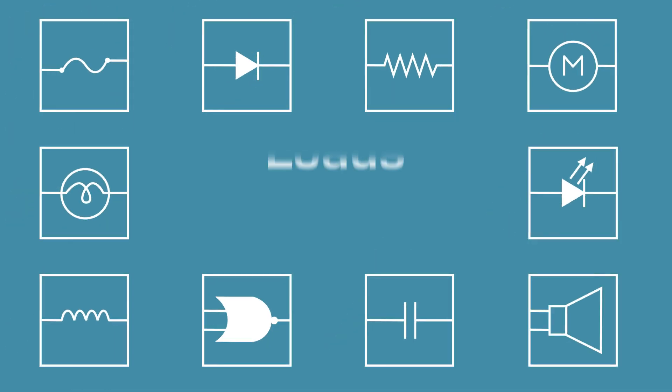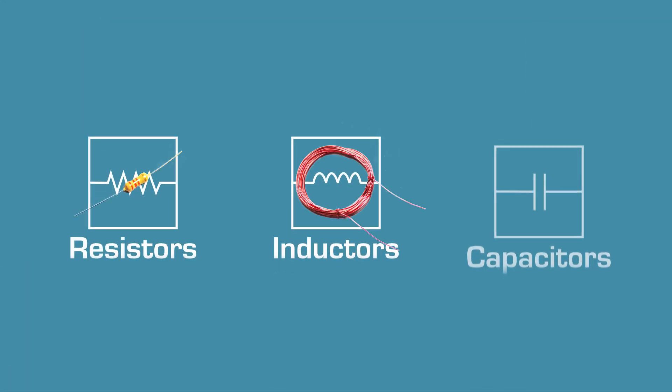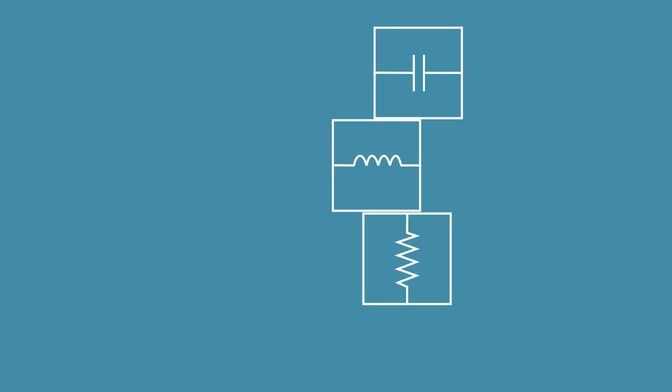Special items called loads resist the current's flow in a way that extracts the current's power. Resistors, inductors, and capacitors are three types of loads that form the basic building blocks of most circuits.